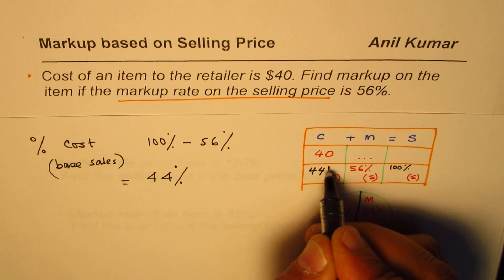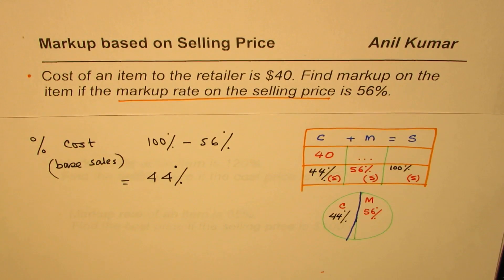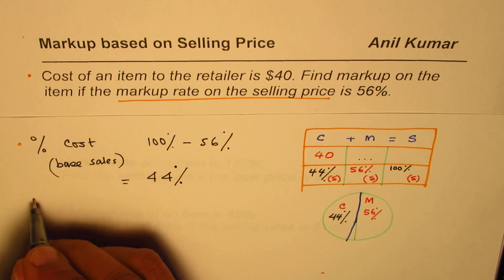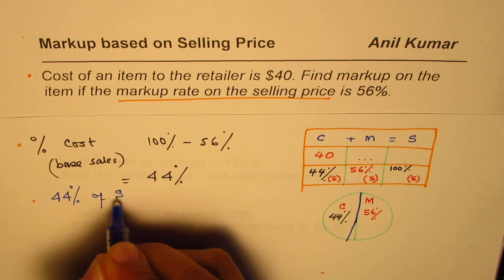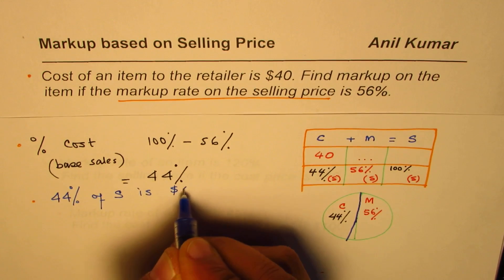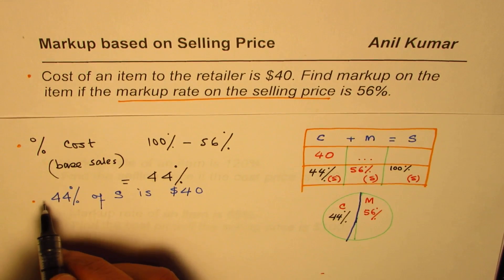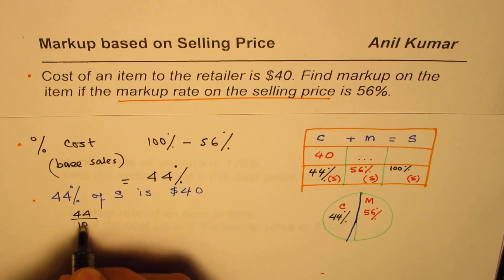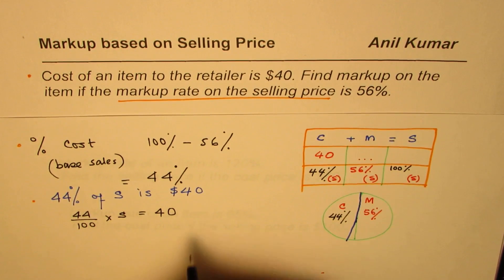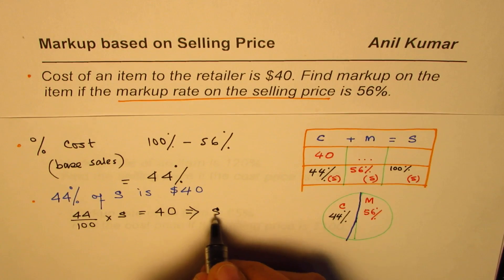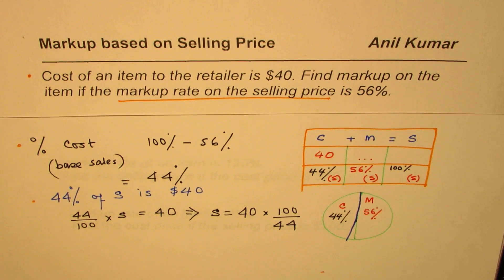We know that 44% of sales equals $40. So we can write this in equation form: 0.44 times sales equals $40. Rearranging, sales equals 40 times 100 divided by 44.